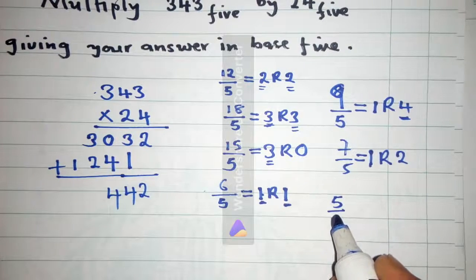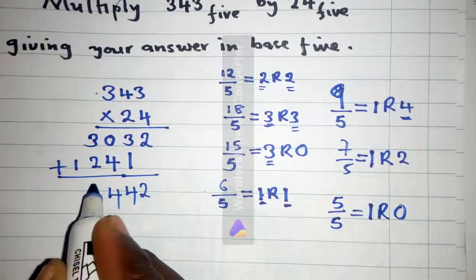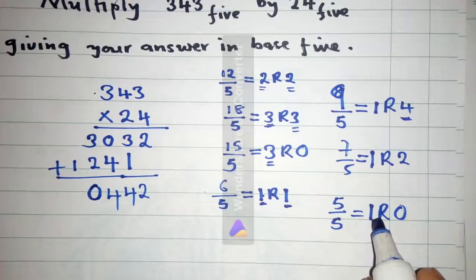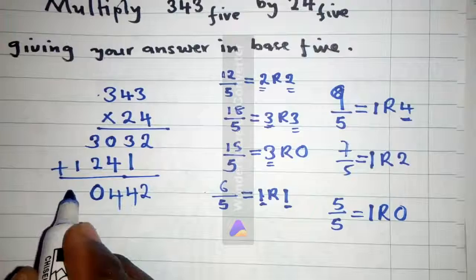So it's 5 divided by 5, which is 1 remainder 0. So we put our 0 here, we put it here, and this 1 we come and add it to this. 1 plus 1 is 2.